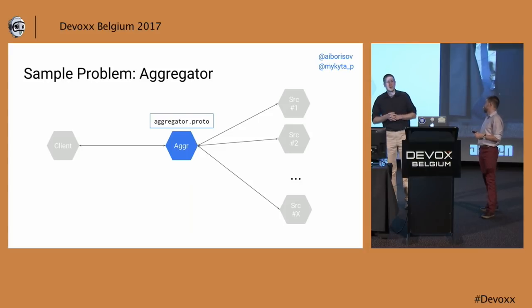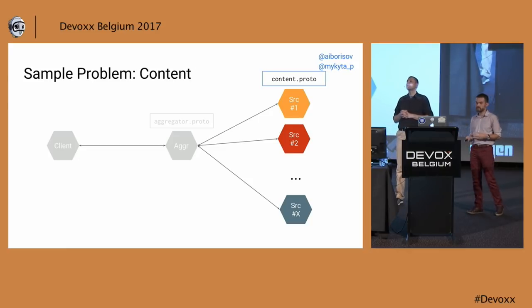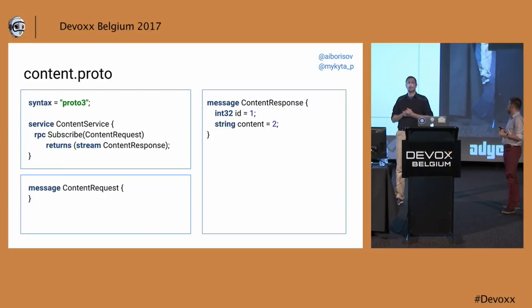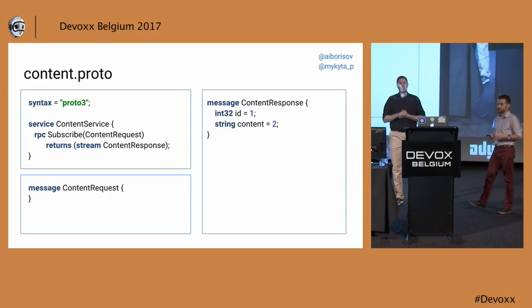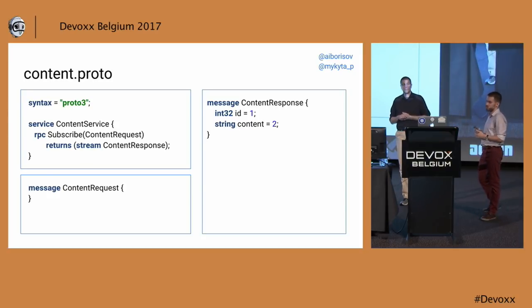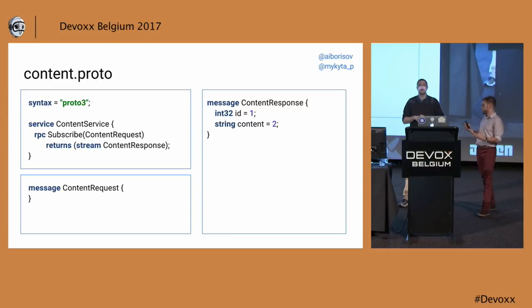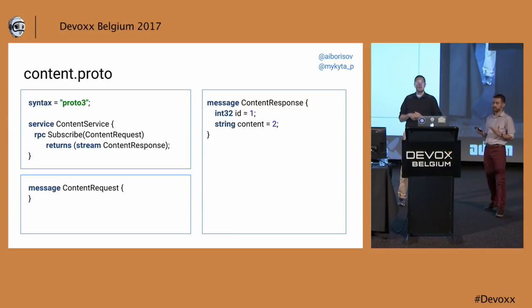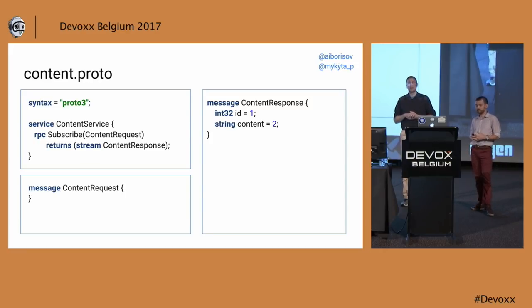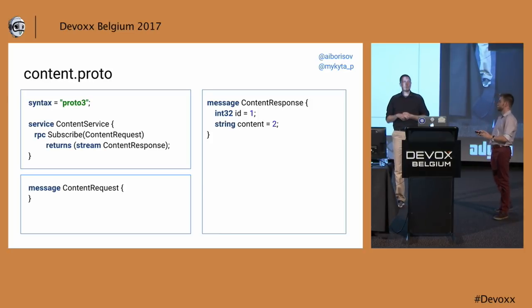That was the aggregation service definition. It takes data from other services — it gets it from content services. Let's describe the content service. Content service is even simpler: nothing in the request and just ID and content in the response. We'll have a separate service for Pokemons and a separate one for big data buzzwords, but both are described using the same API definition. Using this API definition, we call the gRPC runtime and it generates service definitions and clients for us. The aggregation service will call our content services using these clients or stubs.